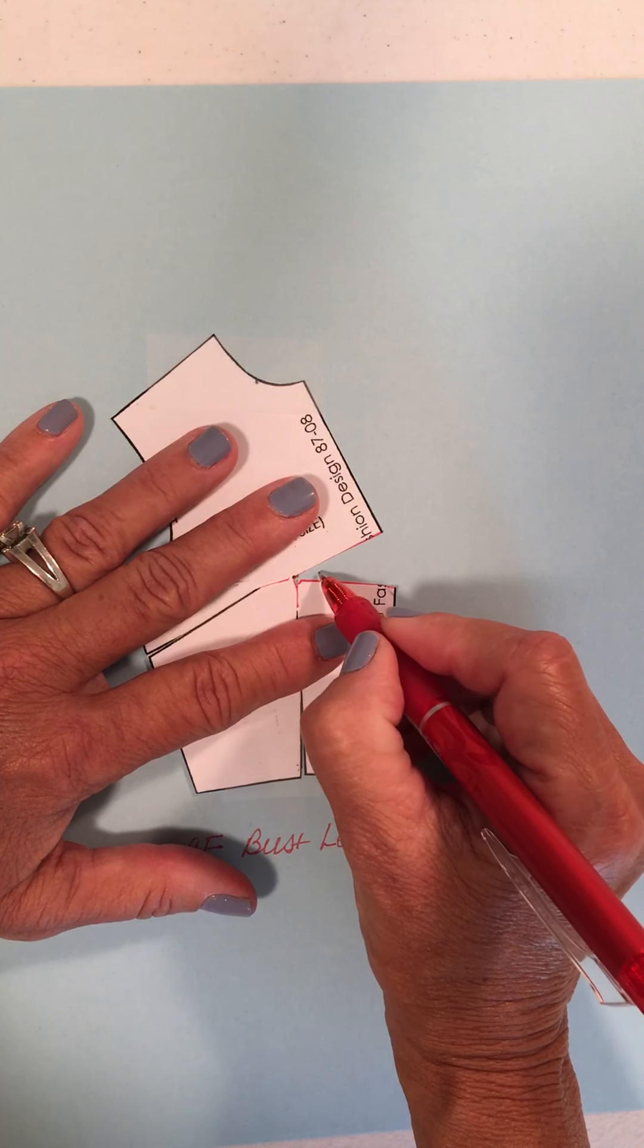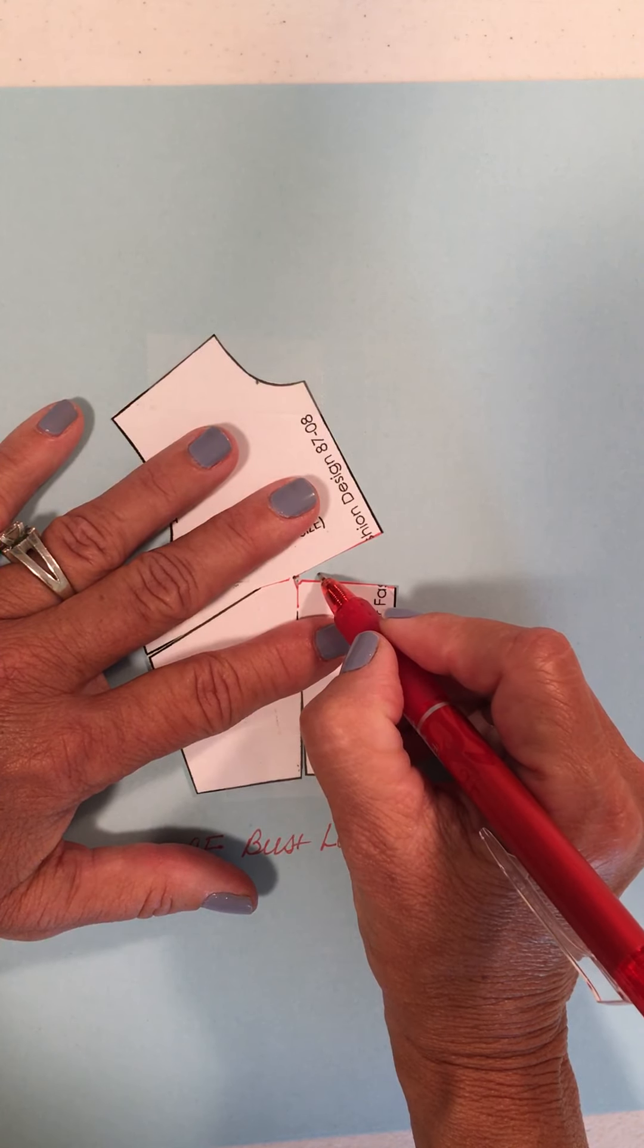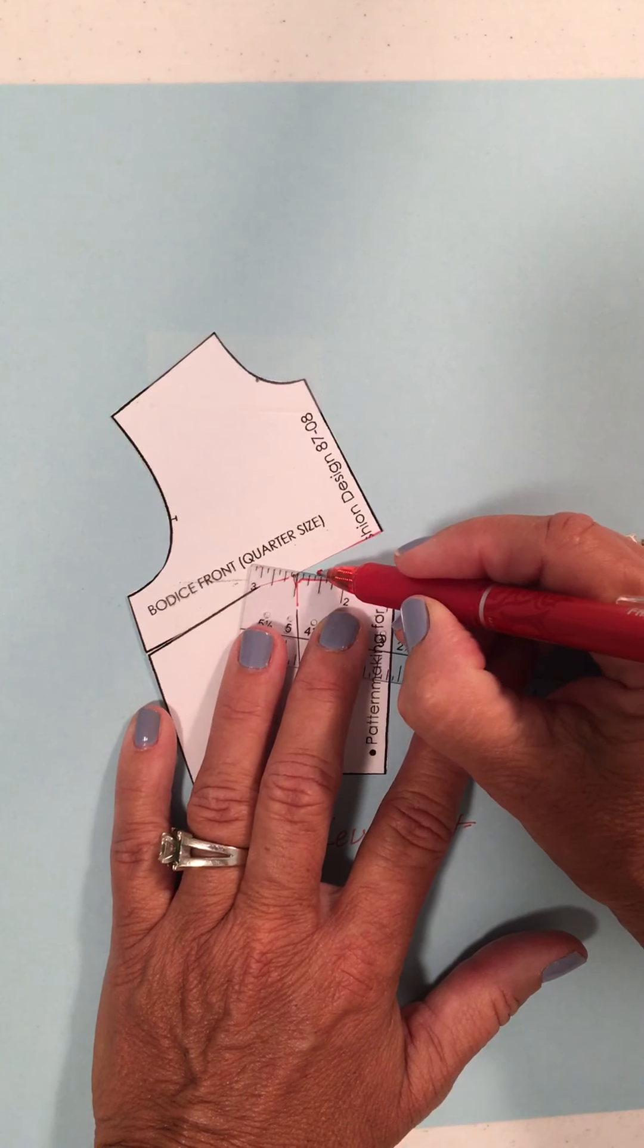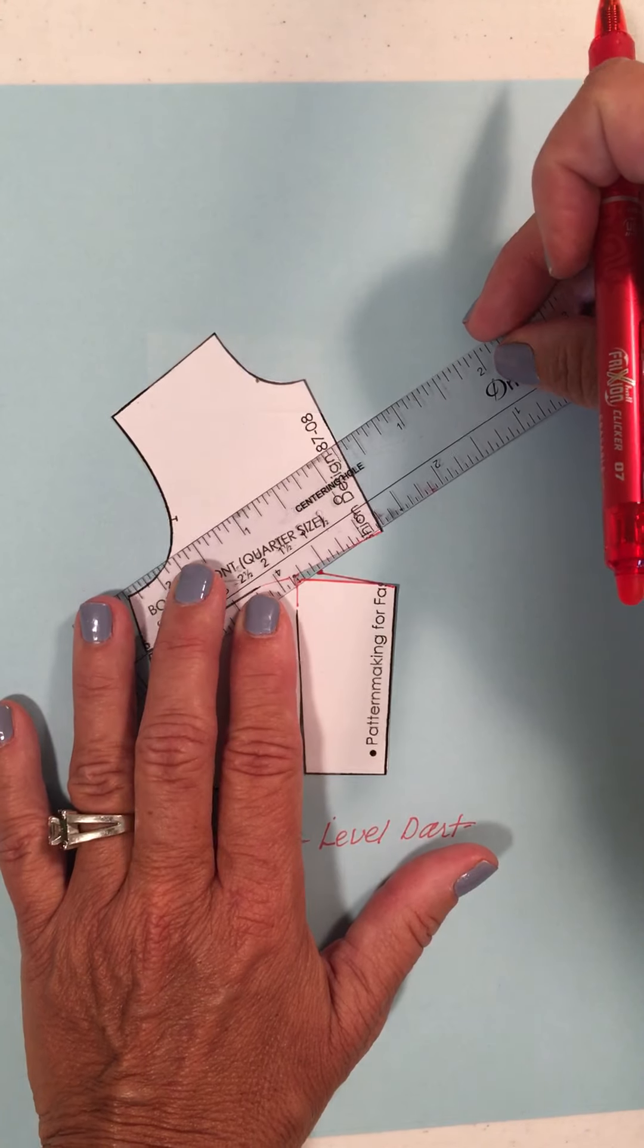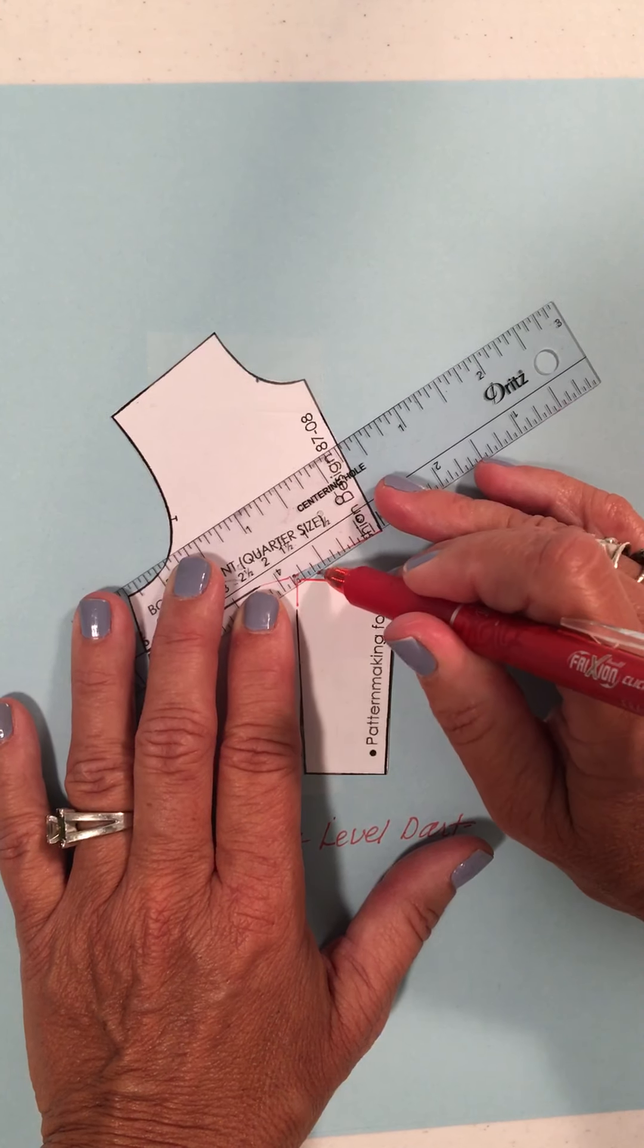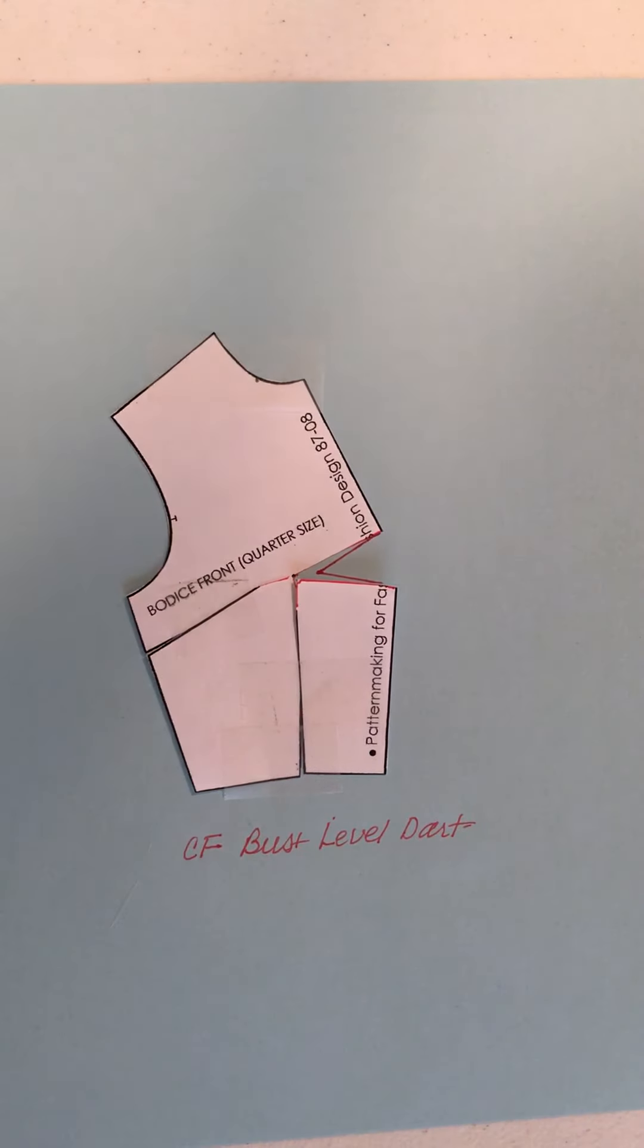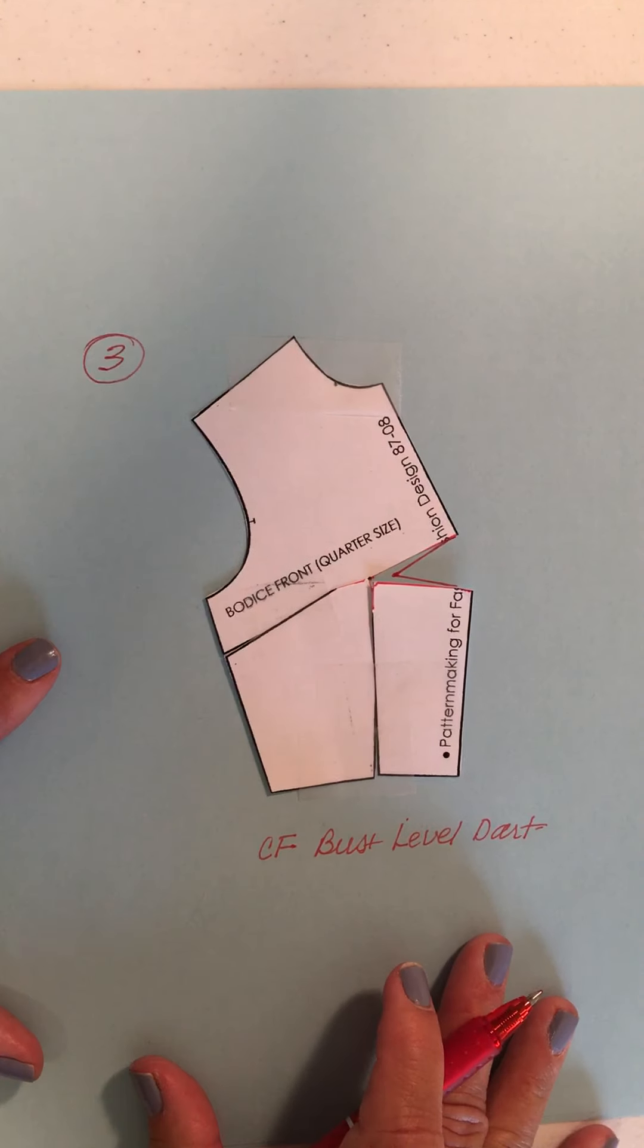This would come out from the bust point anywhere from, maybe this would only be three quarters because it's close to the bust line. I'm not sure until I make the prototype in muslin and I fit it. But I'm drawing my dart legs. I go to the very edge there. So that is number three.